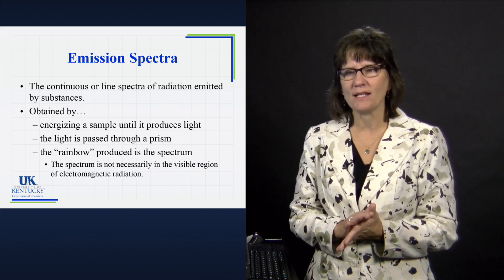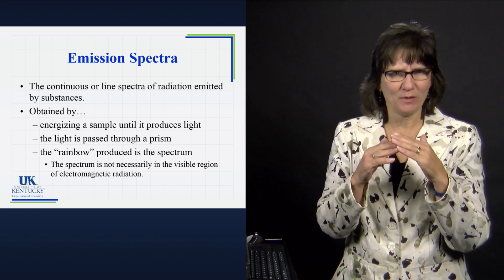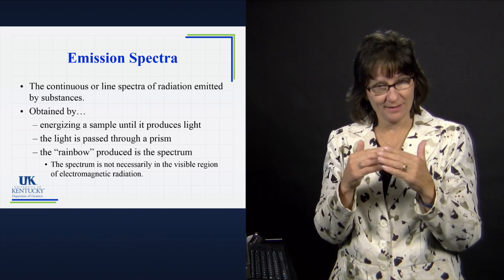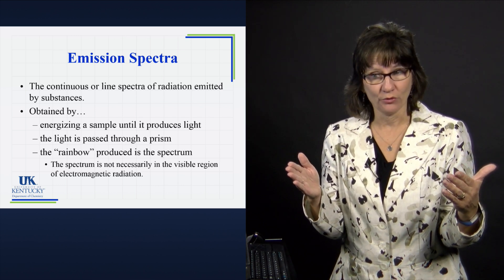But when that gets passed through, what happens? Well, what it does is it separates out the wavelengths and we call that a rainbow, but it doesn't have to be a rainbow because it doesn't have to be in the visible light region. But this is an example. That rainbow is the spectrum that gets produced.